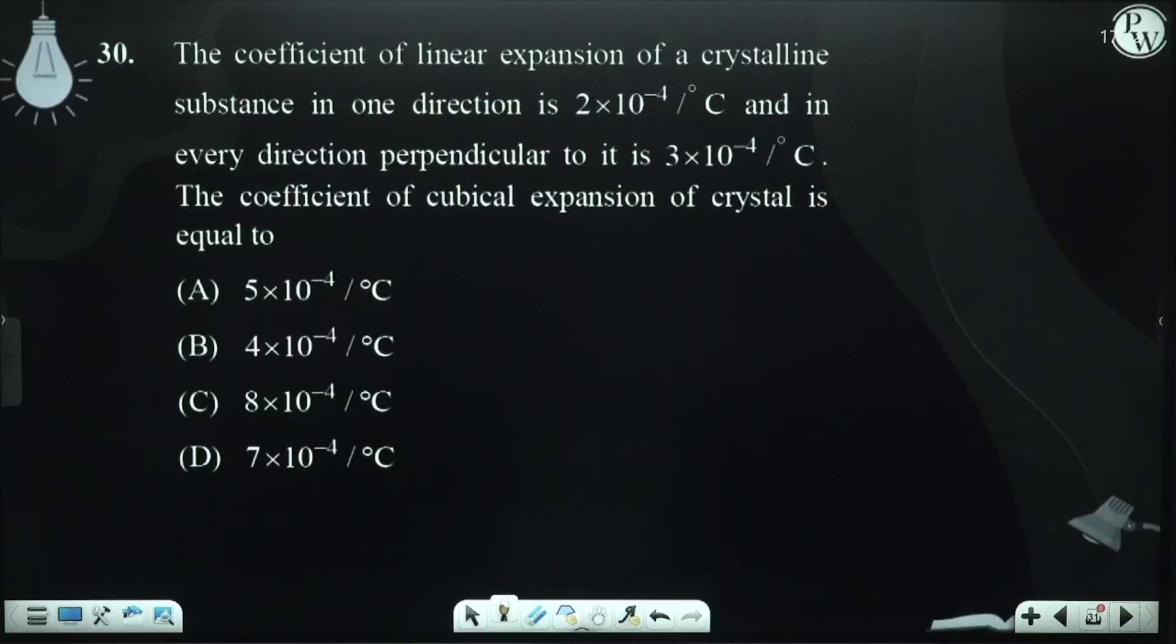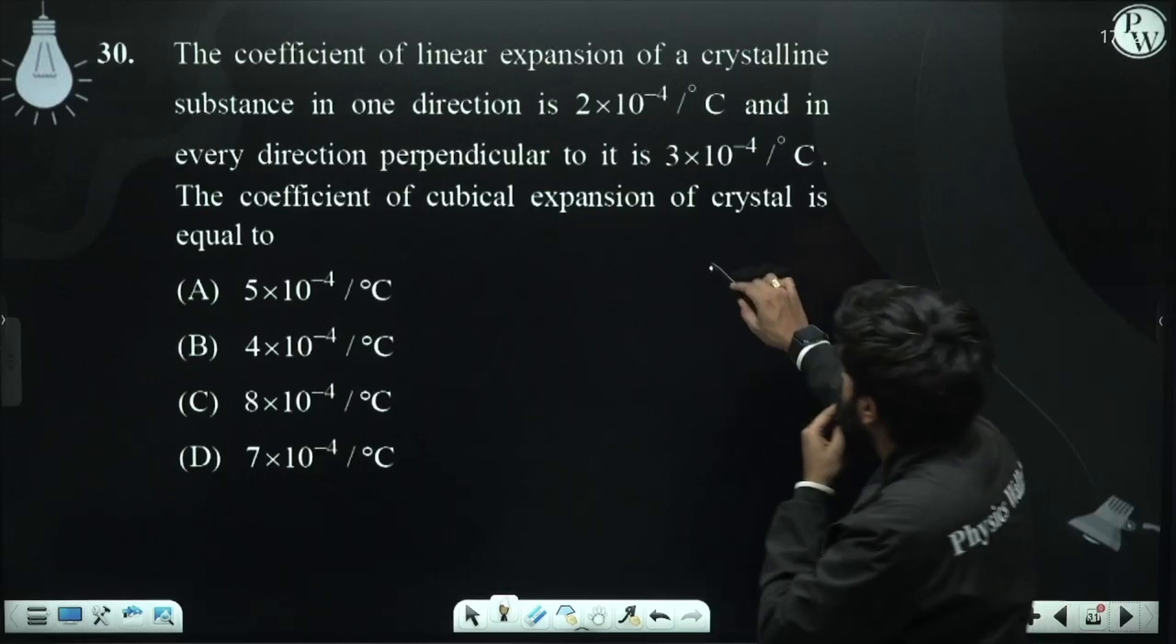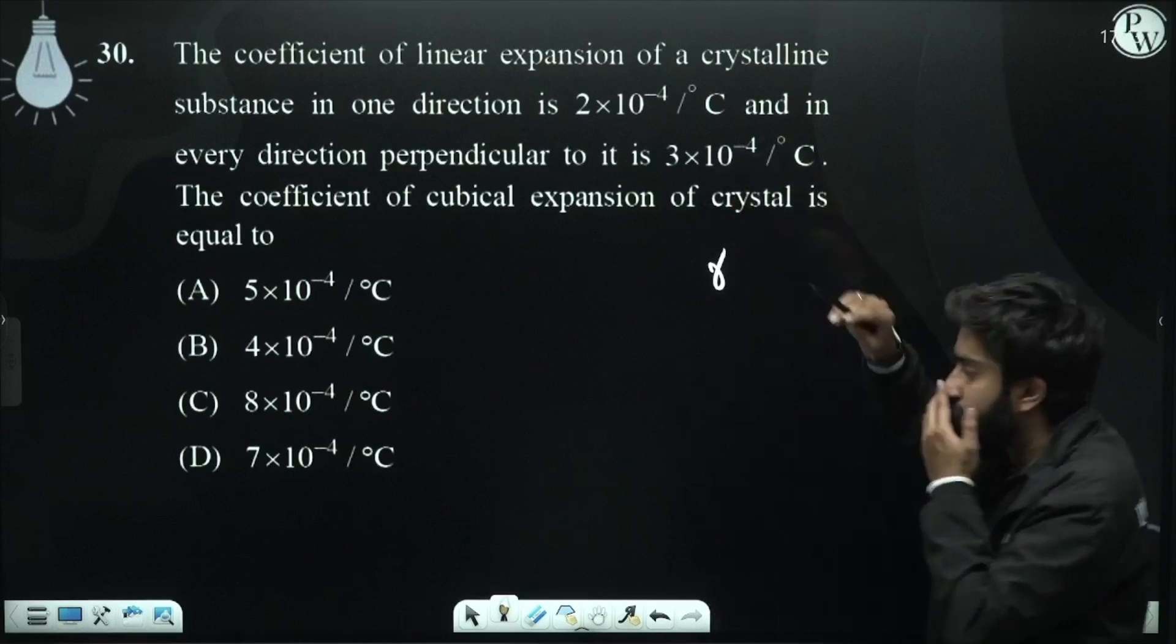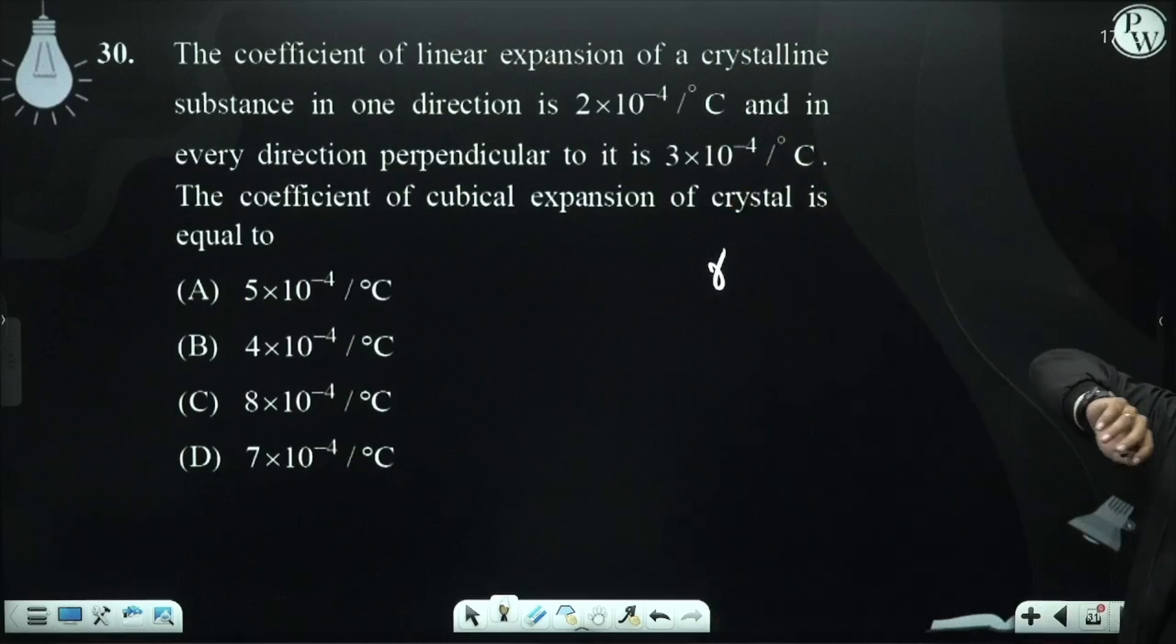The coefficient of linear expansion of the crystalline substance in one direction is 2×10⁻⁴/°C and in every direction perpendicular to this is 3×10⁻⁴/°C. The coefficient of cubical expansion of the crystal. Look, this is a type of anisotropic solid. Every place is different.